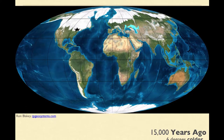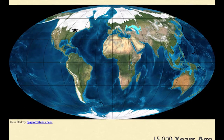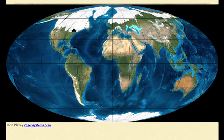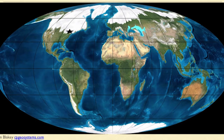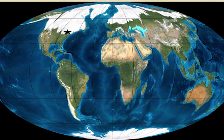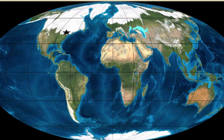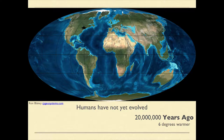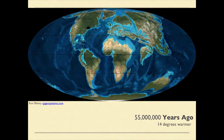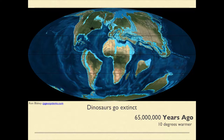15,000 years ago, glaciers covered all of North America — about a mile thick above Jersey City. They ended at Staten Island, and sea level was 360 feet lower, with the coastline hundreds of miles further out. 20 million years ago, humans hadn't evolved yet, and the location looks basically the same. By 35 to 65 million years ago, Jersey City is almost in the exact same location.